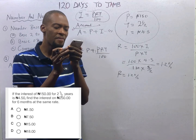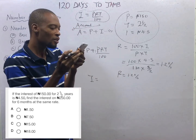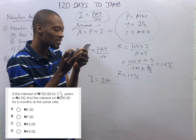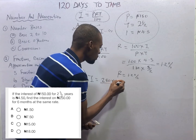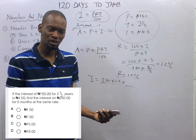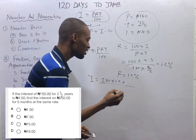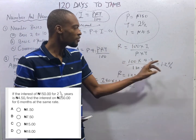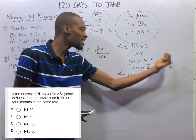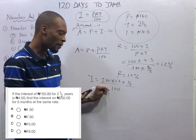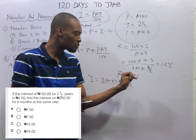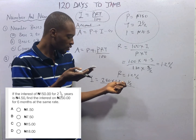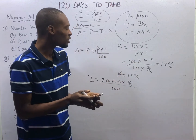The second part says: find the interest on N250 for 6 months at the same rate. So principal is N250, rate is 1.2%, and time is 6 months — divide by 12 to convert to years, giving 1/2 year. Using interest = P × R × T / 100, we get 1.5 Naira. Ladies and gentlemen, the rate from the first part is used in the second part, and the interest is N1.5.